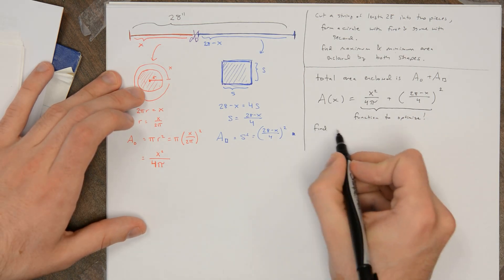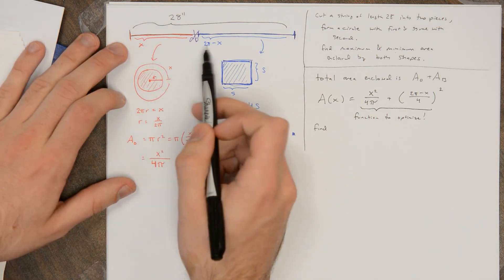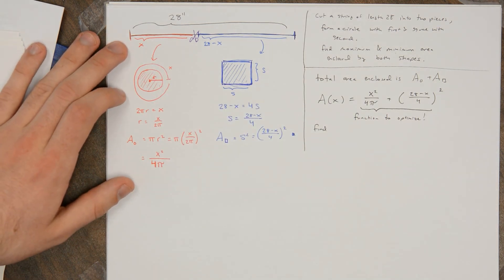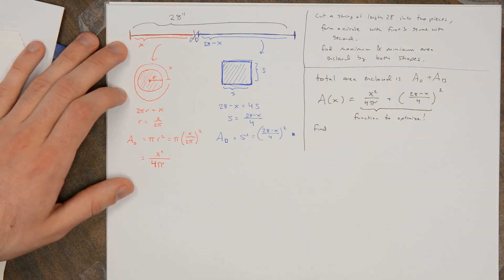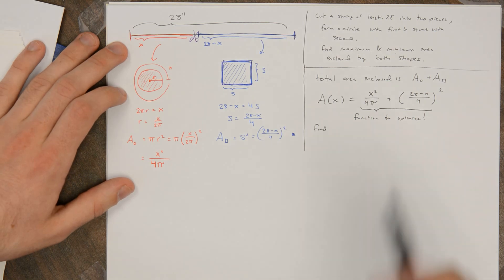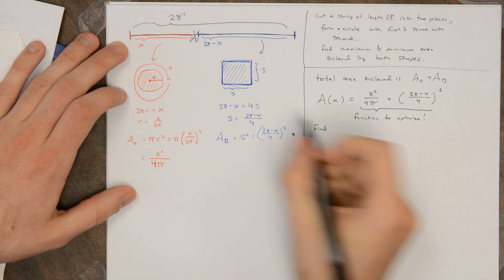So we'll find the real world domain. Well, we need to cut x inches off of a piece of string. And try as I might, I can't cut negative 1 inch off of a piece of string to get a string of length negative 1 inches and a string that's length 28 inches. So x needs to be greater than or equal to 0.